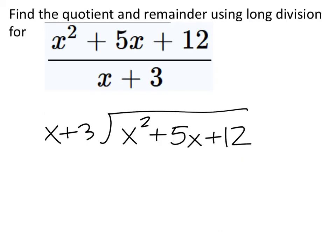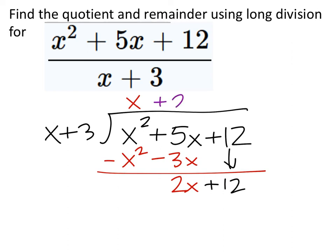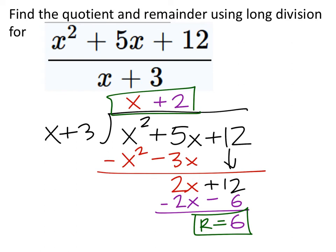So long division on this. How many x's go into x squared? Just x. So x times x is x squared. x times 3 is 3x. This is what I'm taking away. So I end up with 2x. And I'm going to drop that plus 12 right there. Now, how many x's go into 2x? Two of them do. So 2 times x is 2x. 2 times 3 is 6. I'll take these out, and I have 6 there. So I've got x plus 2 and I've got a remainder of 6.